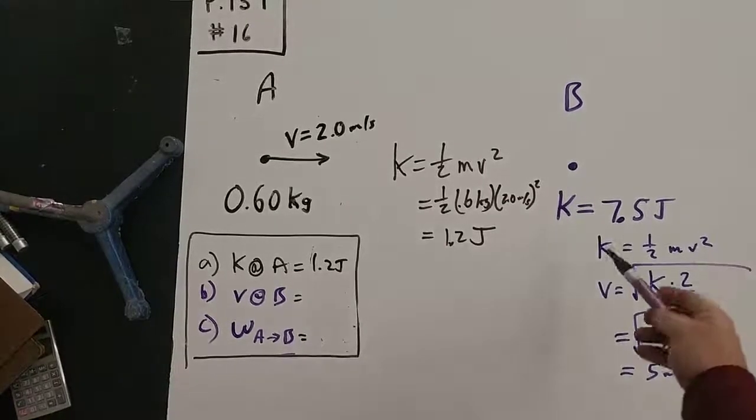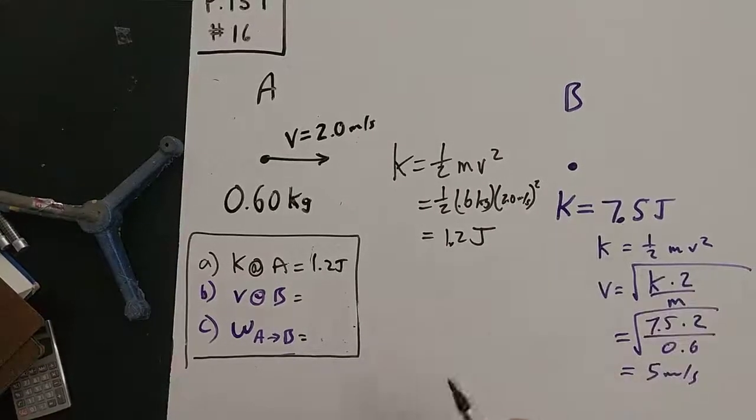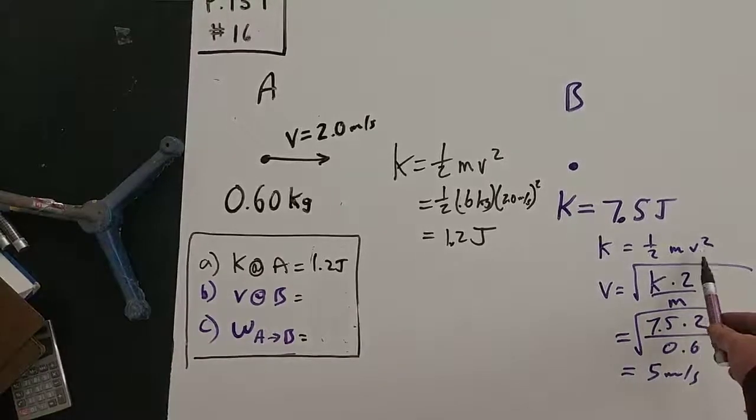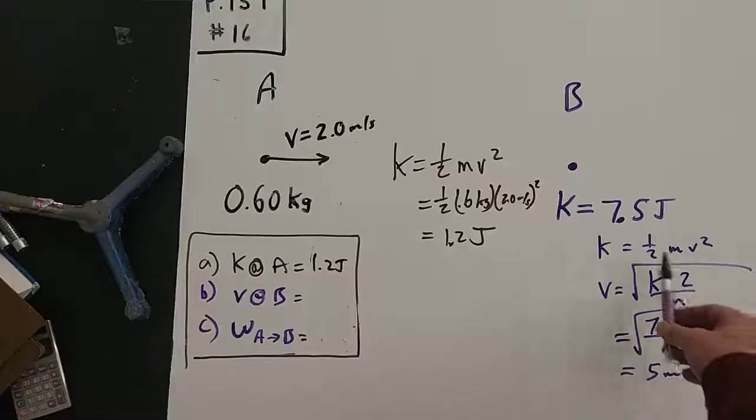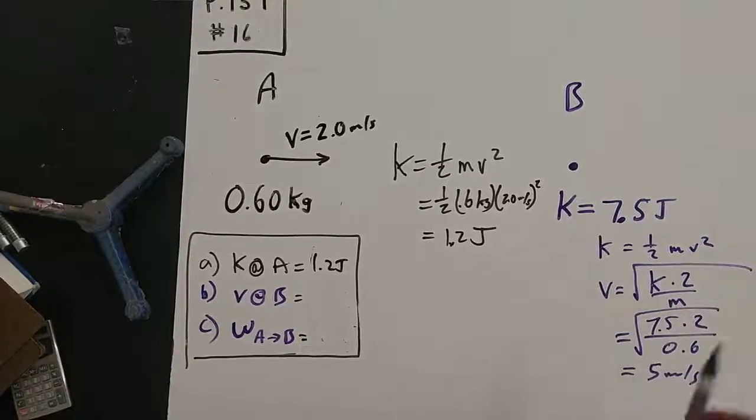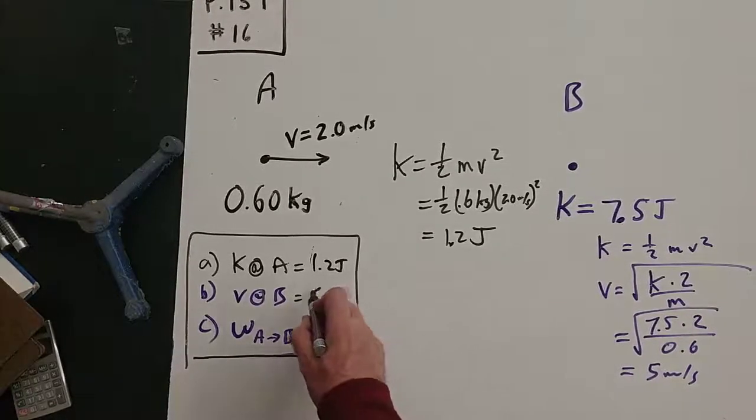Okay, now we're back. And so we said, here's the formula for kinetic energy. I like to rearrange it to solve for what I'm looking for, velocity. So K times 2 over M, plug all that in, we get 5 meters per second is my velocity here.